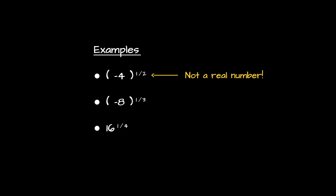Example 2, on the other hand, asks us to think about the cube root of negative 8 — a number which, when multiplied by itself three times, gives negative 8. This time there is such a number: it is simply minus 2, since minus 2 multiplied by itself three times gives minus 8.